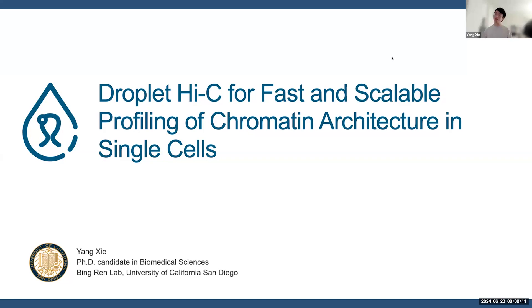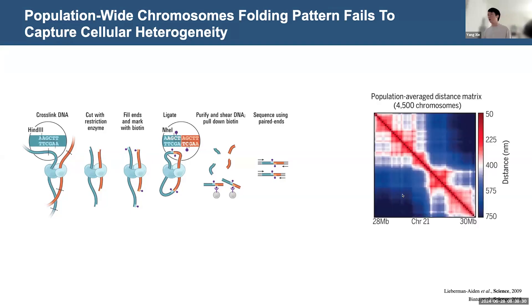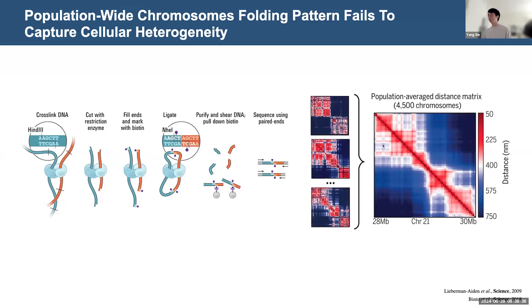Many of us are familiar with the Hi-C method, which has been broadly used to study the chromatin organization in cells like tissue samples. But this method requires a large number of cells to apply Hi-C to complex tissues. The information that we get always represents a population average, just like the imaging results I showed here.